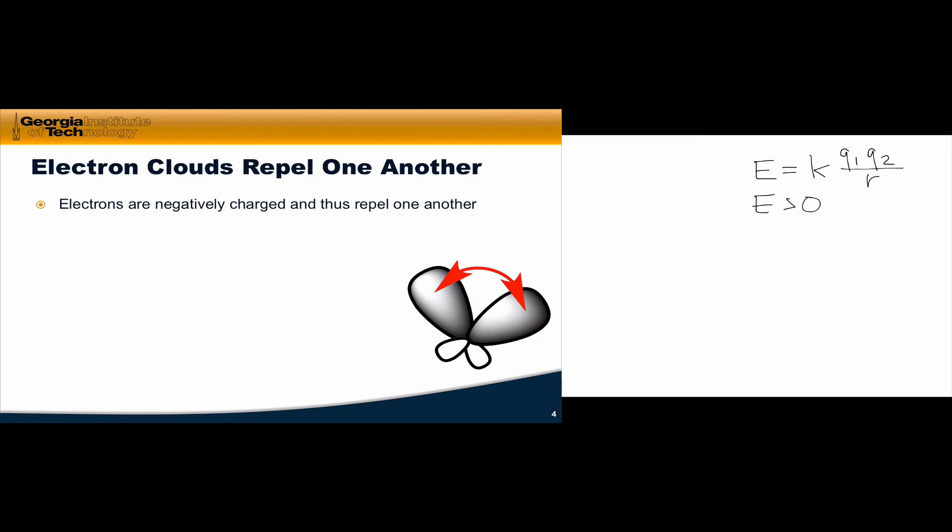Electrons are negatively charged and thus repel one another. The Pauli exclusion principle plays a role here as well. Remember that the Pauli principle says that two electrons within a molecule cannot have the same set of quantum numbers. The punchline is that electron clouds within molecules prefer to be as far from one another as they can possibly get.